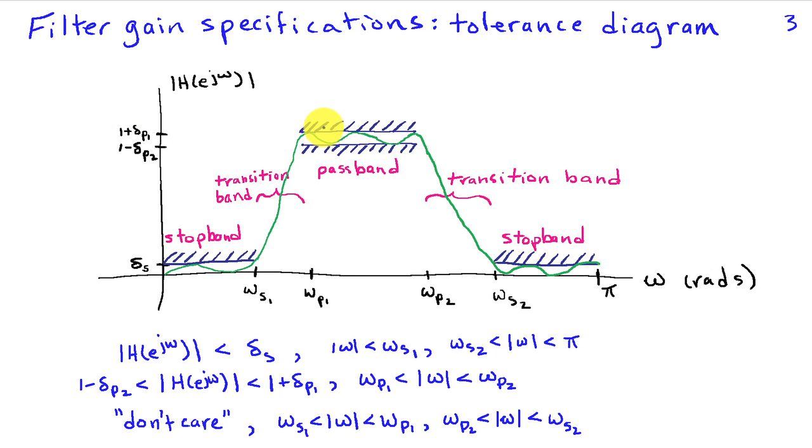It can get a little bigger than one by a value delta P1. It can be a little smaller than one by a value of delta P2. So it has to lie in this range indicated by the blue shading here.